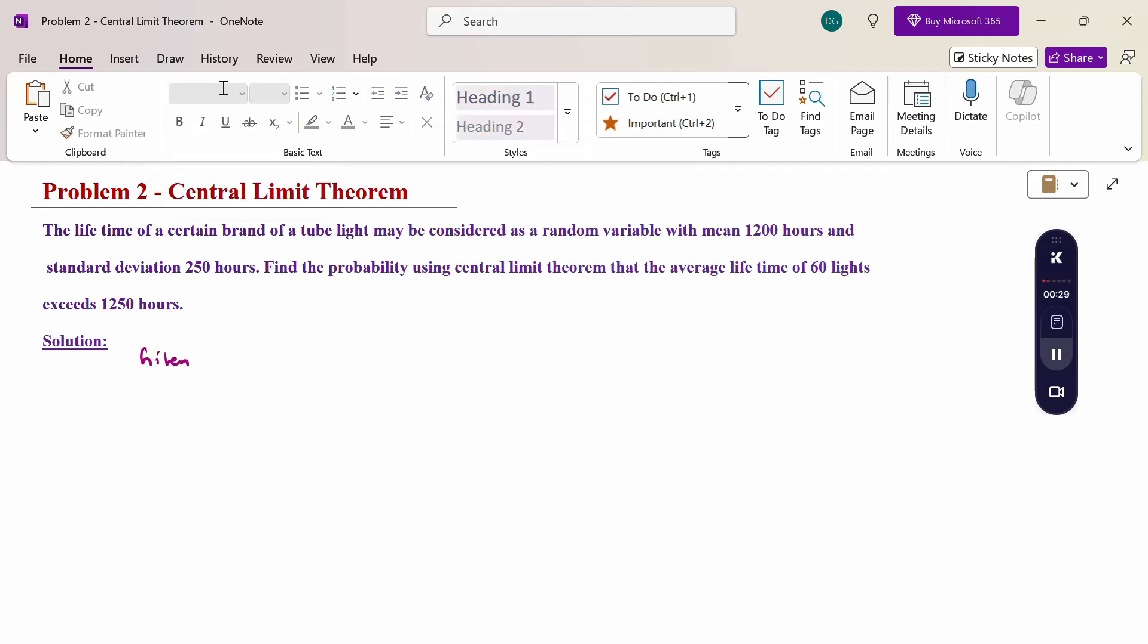Here given population mean, and before that we just consider sample mean. Mean is nothing but average. Sample mean x bar and population mean mu. This is x bar, population mean mu. Sample is nothing but from the population.